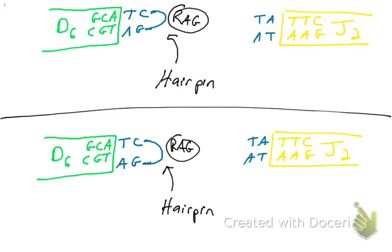What about the joining gene segments? When the RAG enzymes cut the DNA, they seal it with hairpins — you don't want to have exposed five and three prime ends just lying around. This is going to happen in all gene segments. So anytime the RAGs cut, they're going to make these hairpins so you don't have open and free five and three prime ends just lying around.